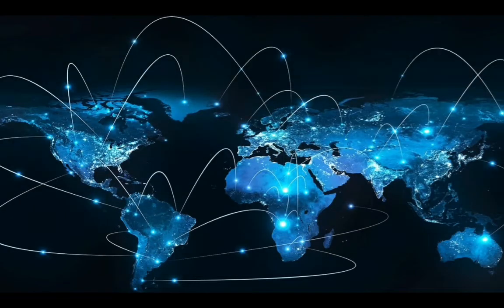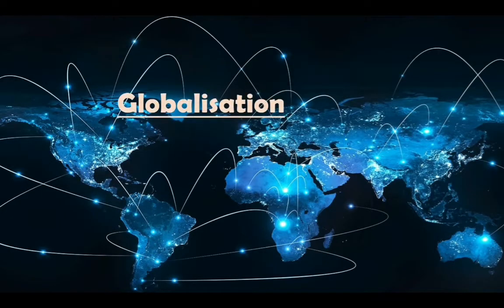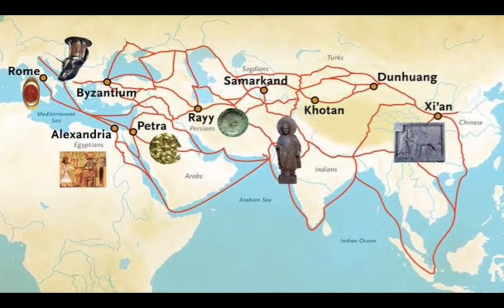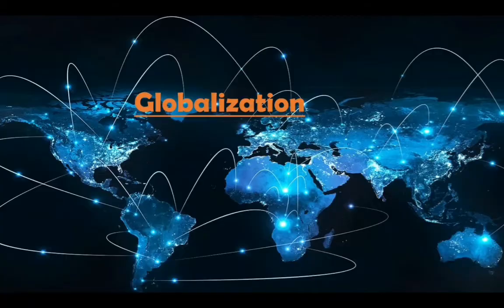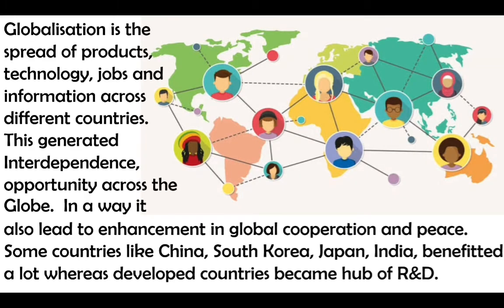Moving on to another major event in economy: globalization. Global trade was not a new thing — what do you think the Silk Road was for? Globalization is the spread of production, technology, jobs, and information across different countries. It was meant to make an interconnected, interdependent world and promote peace and coexistence among countries.